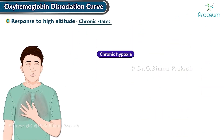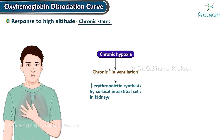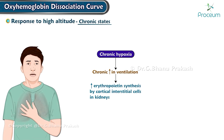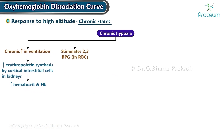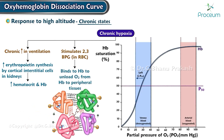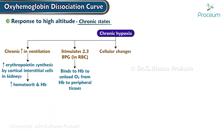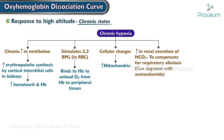In chronic states, chronic increase in ventilation due to chronic hypoxia causes an increase in erythropoietin synthesis by cortical interstitial cells in the kidneys, leading to an increase in hematocrit and hemoglobin. Chronic hypoxia also stimulates the synthesis of 2,3-bisphosphoglycerate in red blood cells, where it binds hemoglobin to unload oxygen to peripheral tissues and causes a rightward shift of the oxyhemoglobin dissociation curve. Cellular changes include increased mitochondria, and increased renal excretion of bicarbonate compensates for respiratory alkalosis, which can be augmented with acetazolamide.